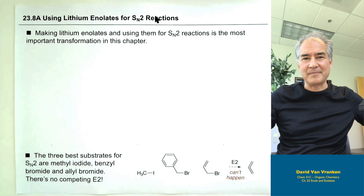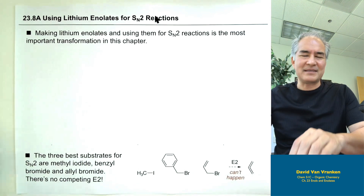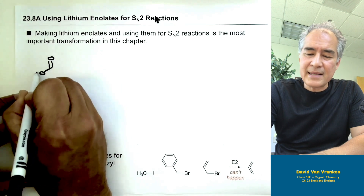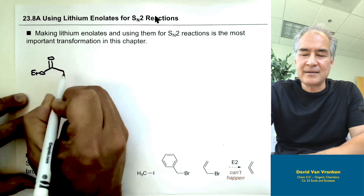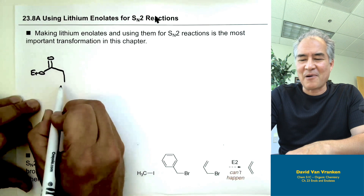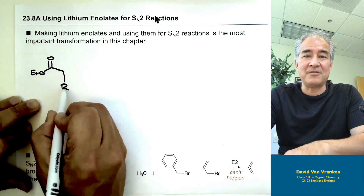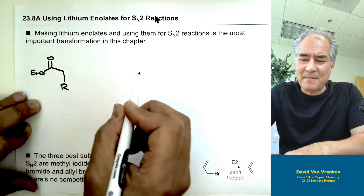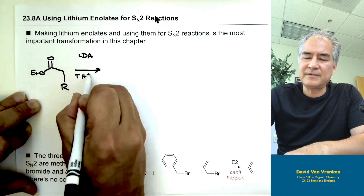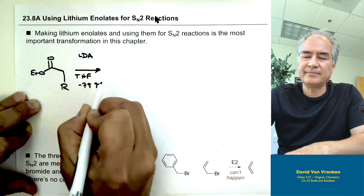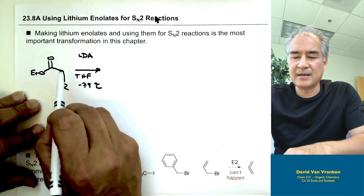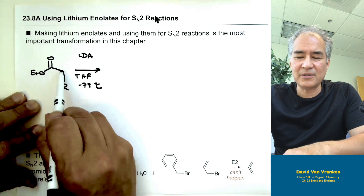Let's come back to lithium enolates. With an ester, even though it's like 100,000 times less acidic than a ketone, LDA has no problem pulling off a proton. It doesn't matter if the R group is a phenyl or a long alkyl chain. We treat this with our recipe you have to memorize: LDA, THF, minus 78 degrees. With an ester, there's no regiochemistry worry — there's only one alpha position, since you can't deprotonate oxygen. You get one enolate.